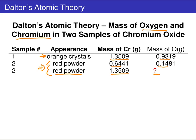We can use the data from the second row — we want to use this mass of chromium to come up with a prediction of what the mass of oxygen will be in this second sample of compound two.